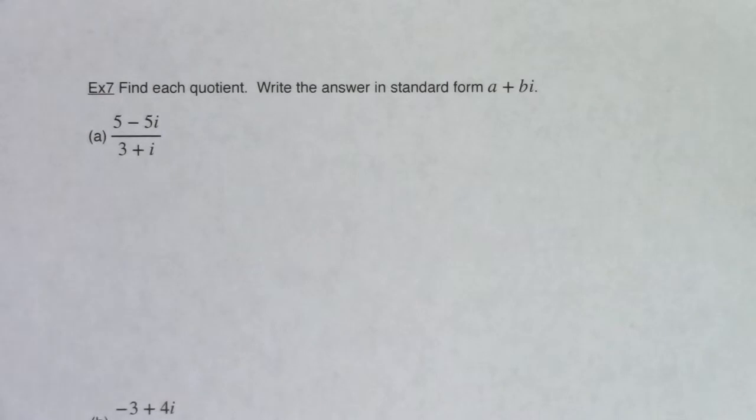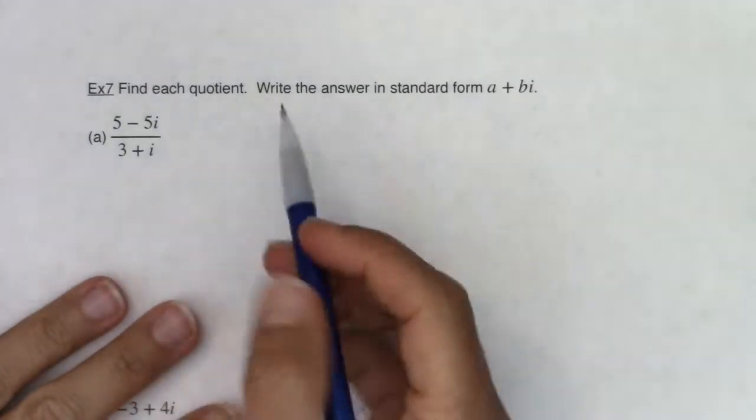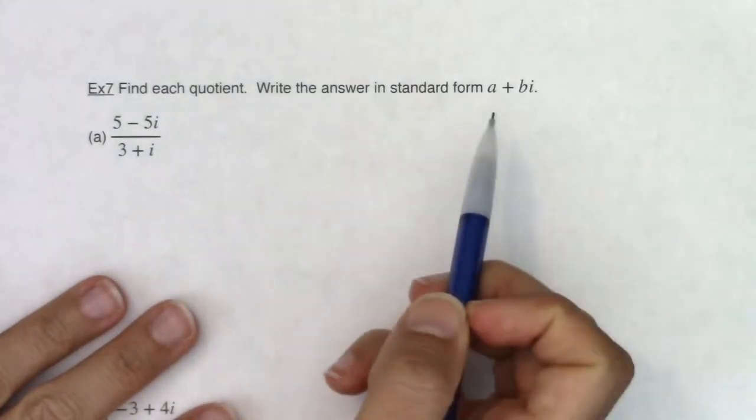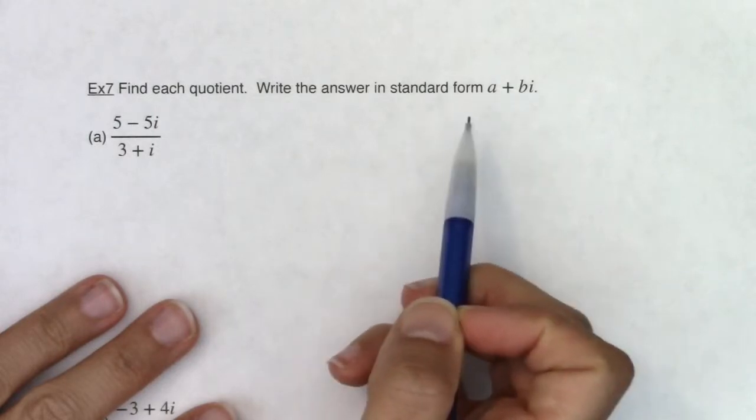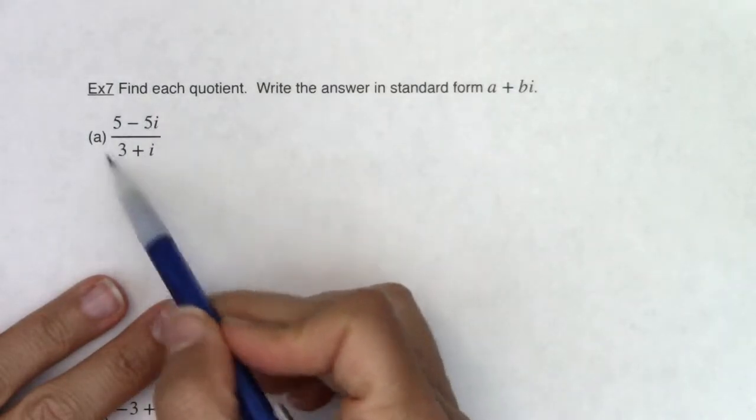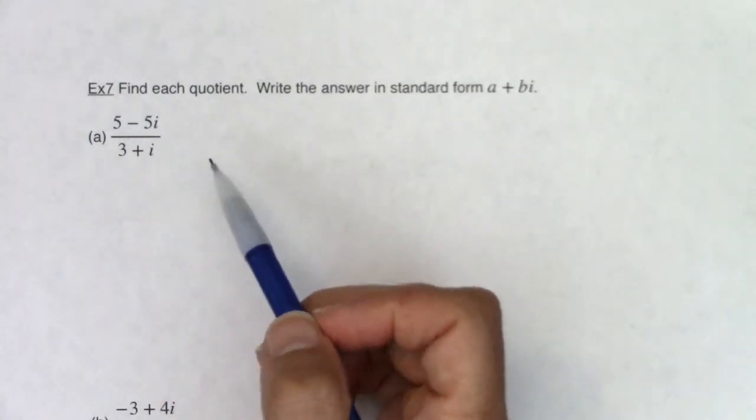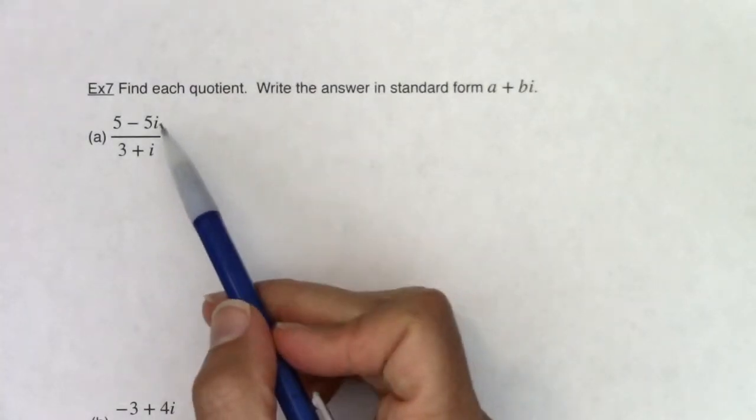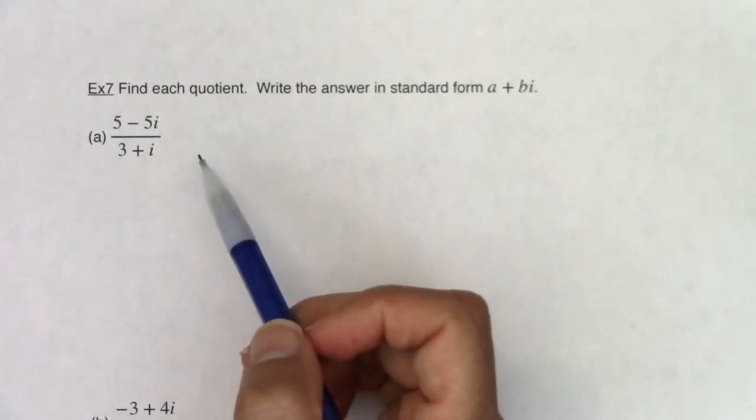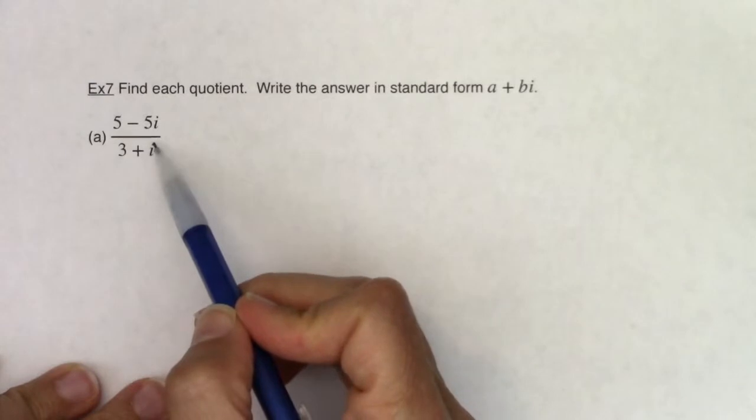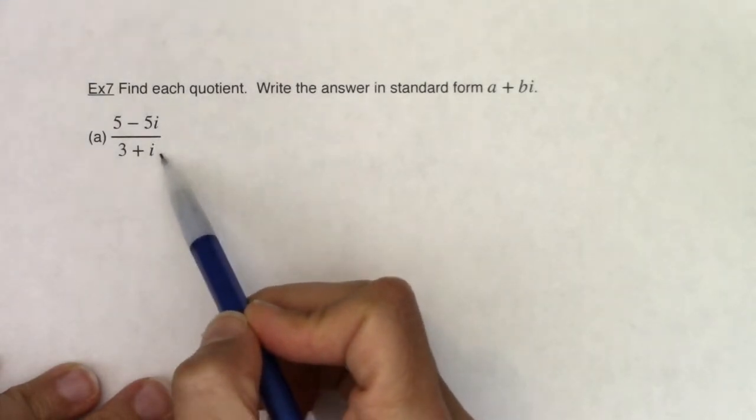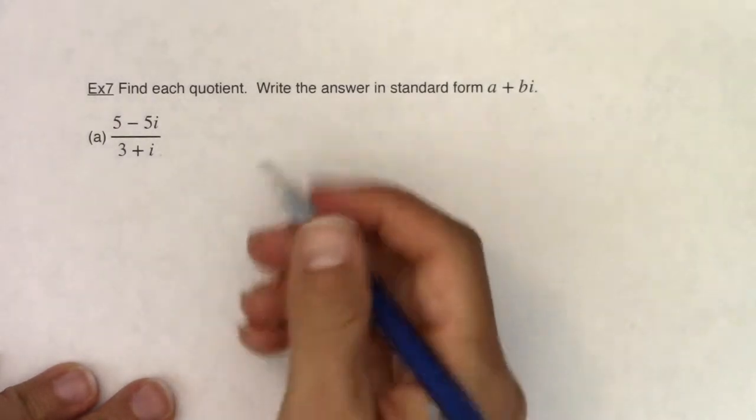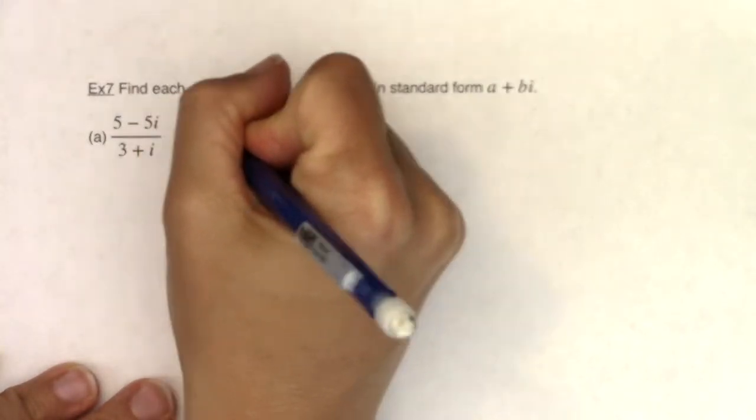Hey Math 31, let's take a look at example 7. We're going to find each quotient and write the answer in standard form, in a plus bi form. Taking a look at this quotient, you might think it's looking good, but math folks aren't happy with it because there's this i in the denominator and we really don't like when radicals are in the denominator. And keep in mind, this is a radical.